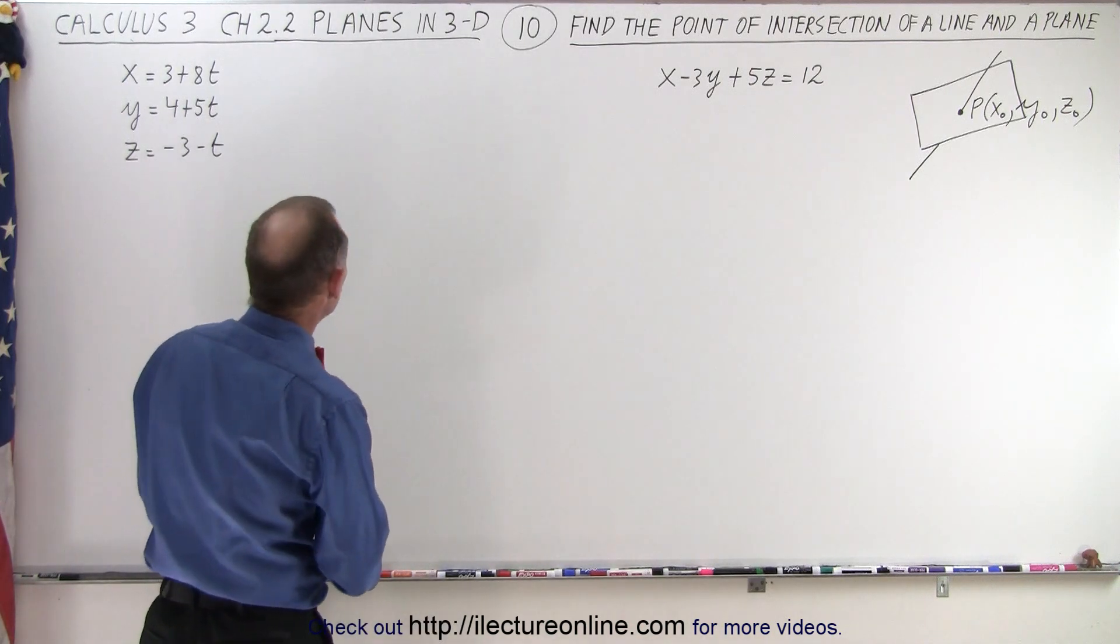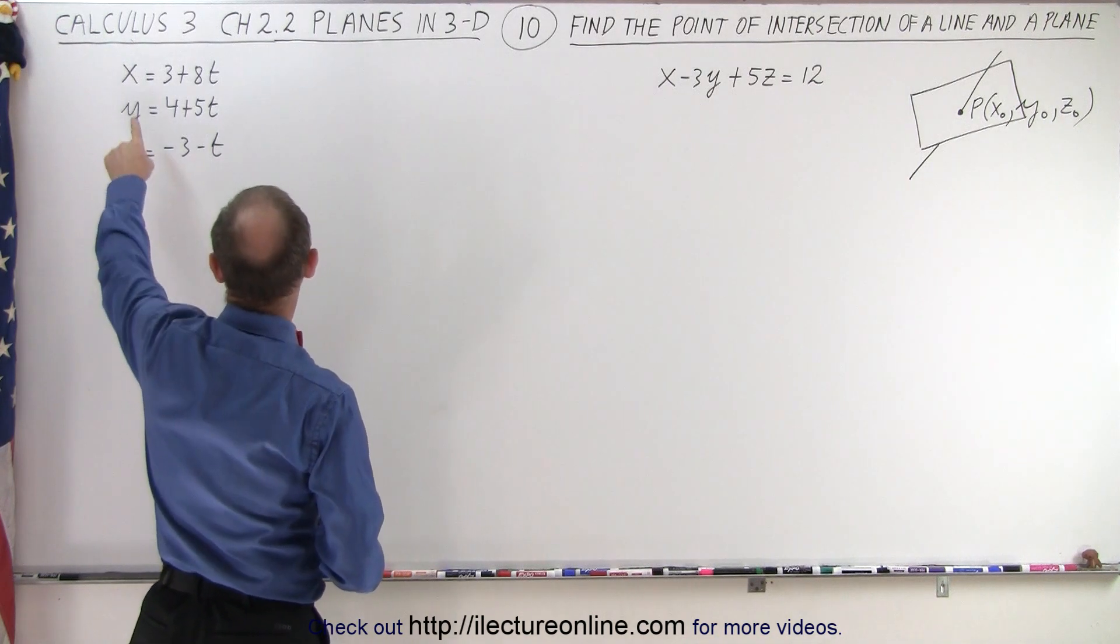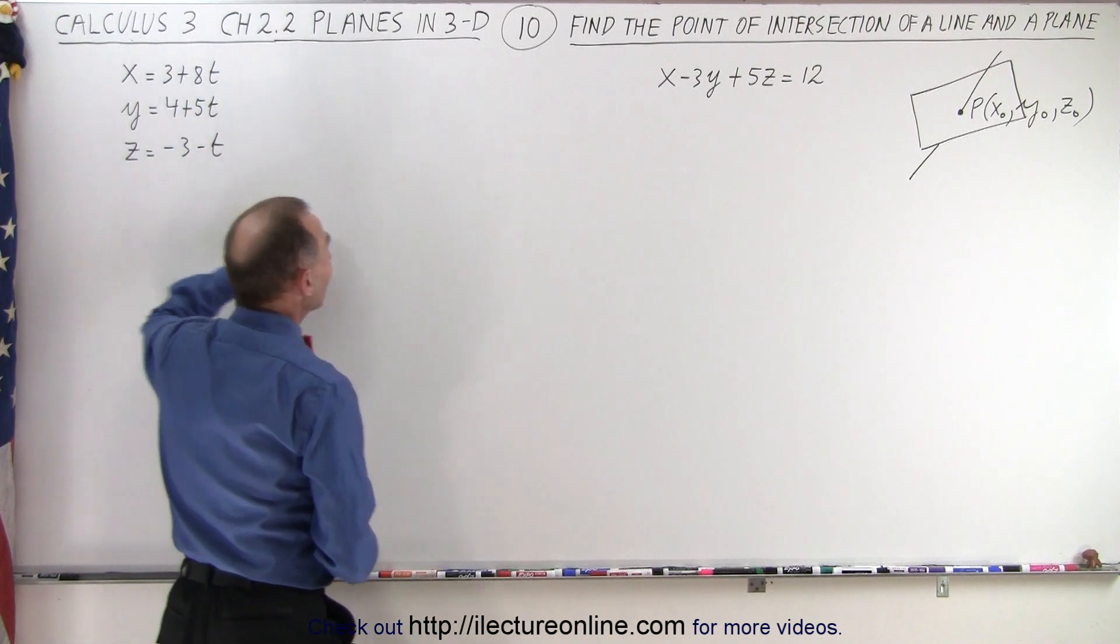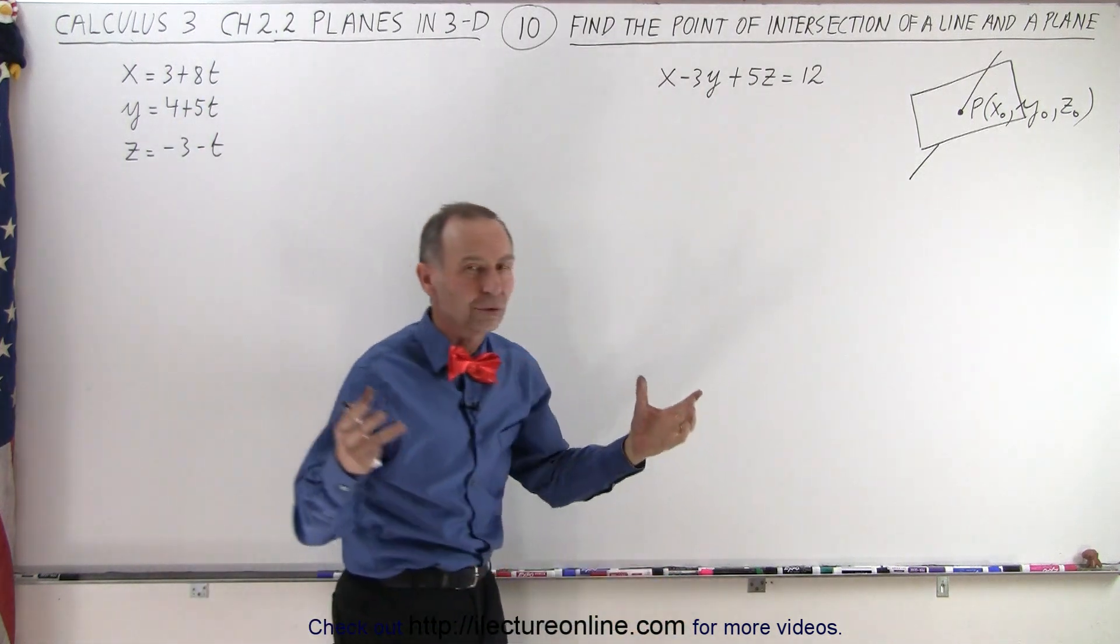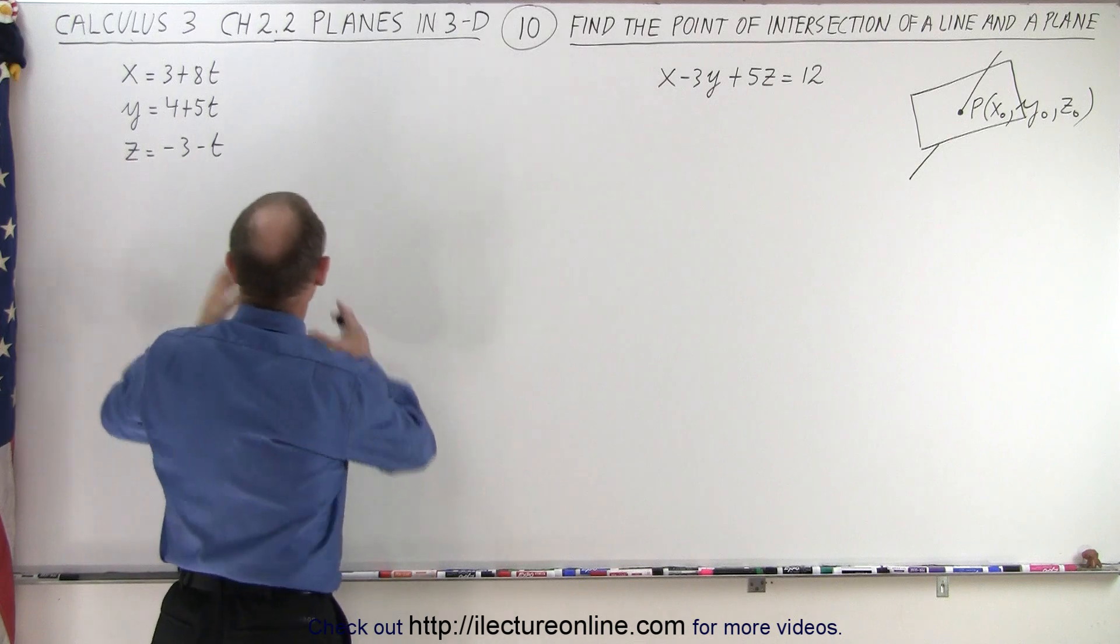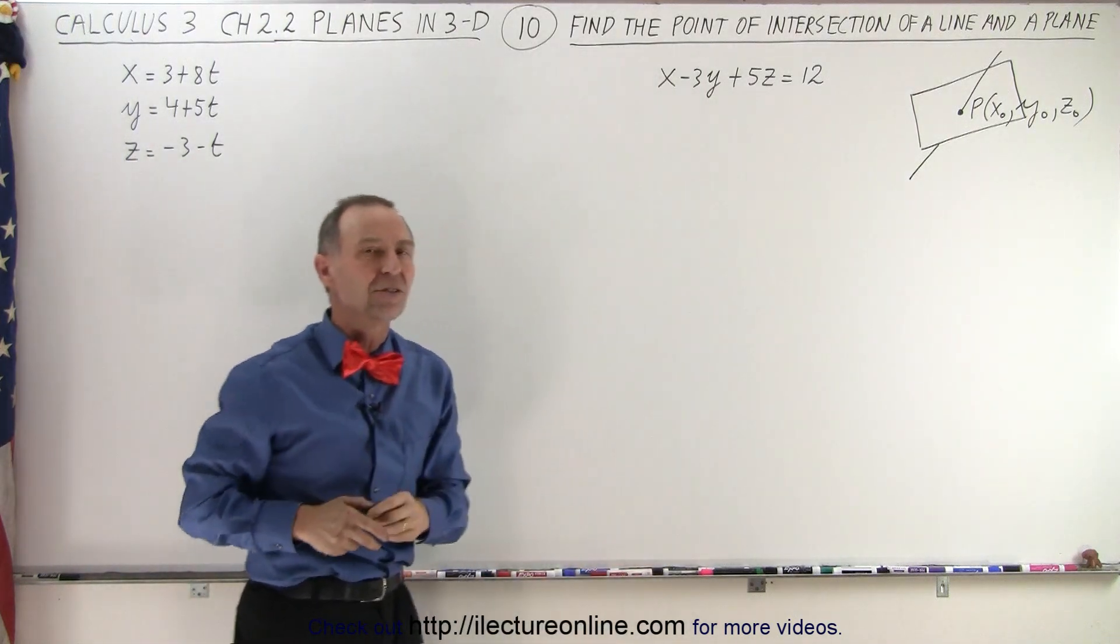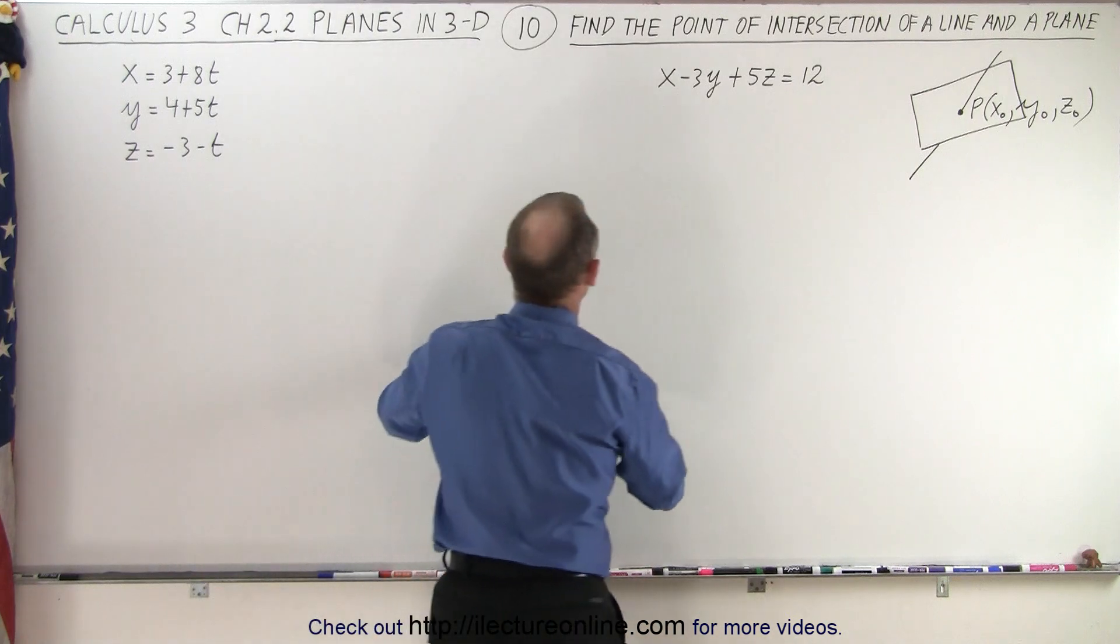Well, what we're going to do is we're going to plug in the values for x, y, and z in terms of the parametric variable t into the other equation. In other words, we're going to solve the equation of the line and the equations of the plane simultaneously. So let's see what that looks like.